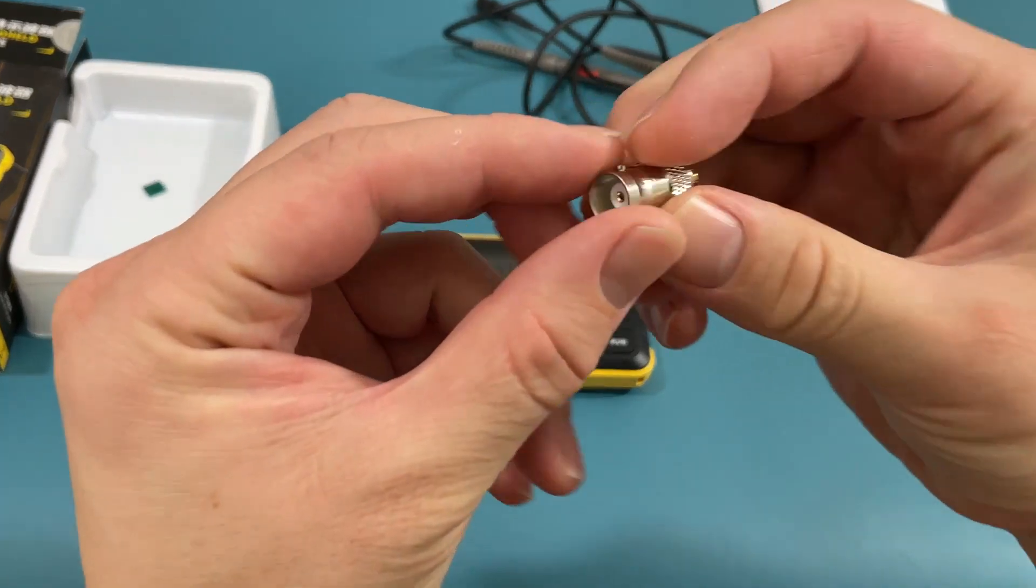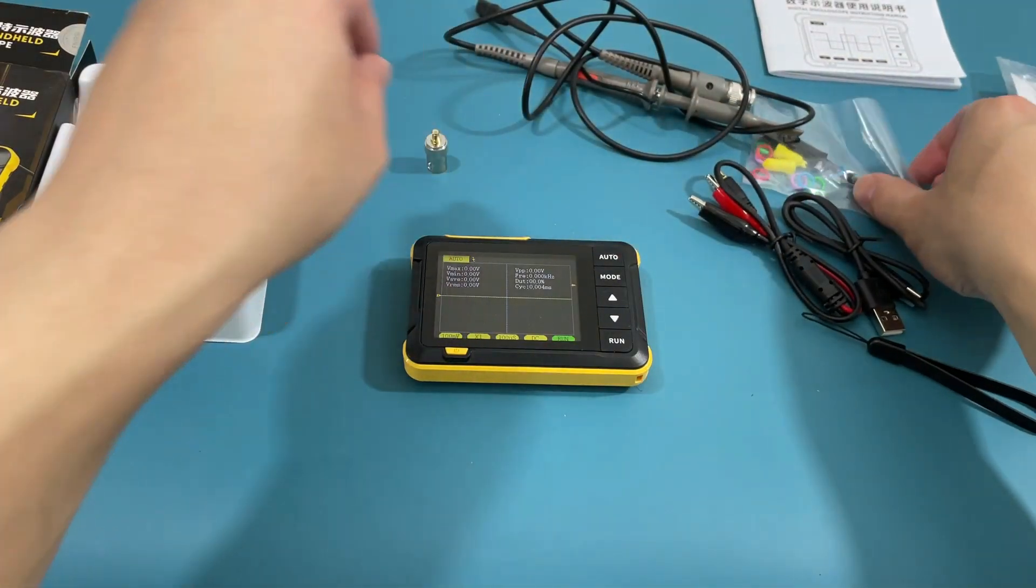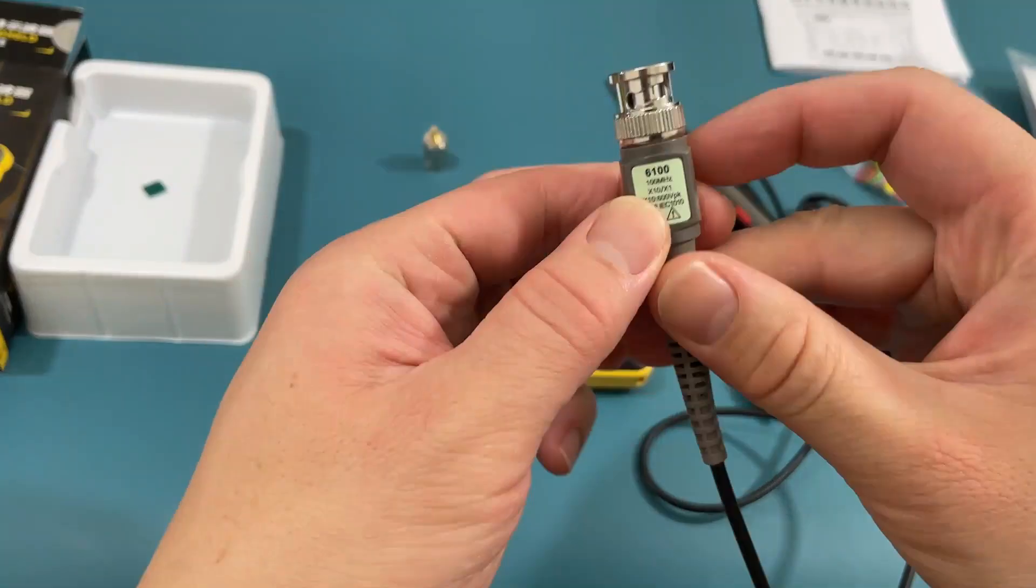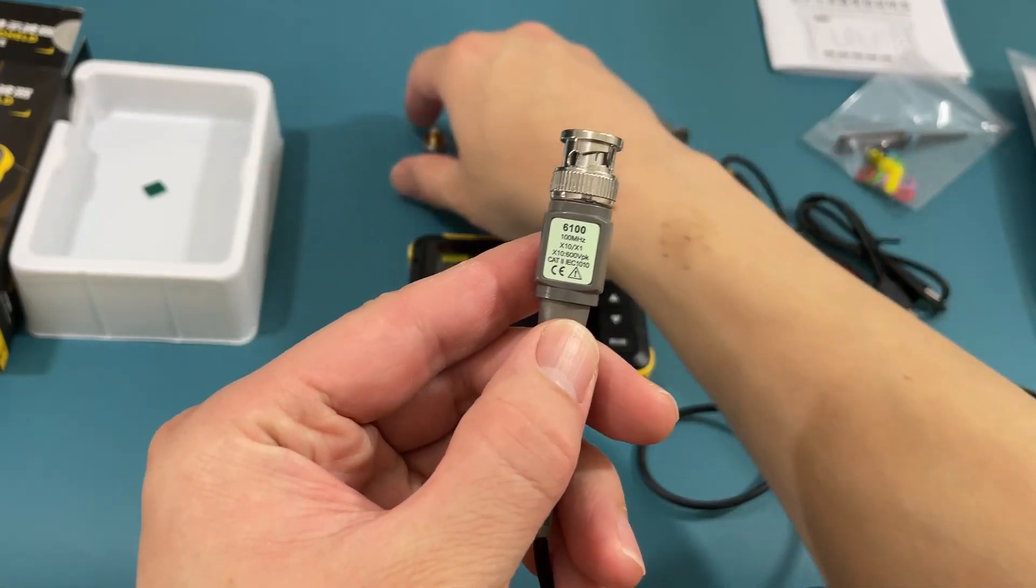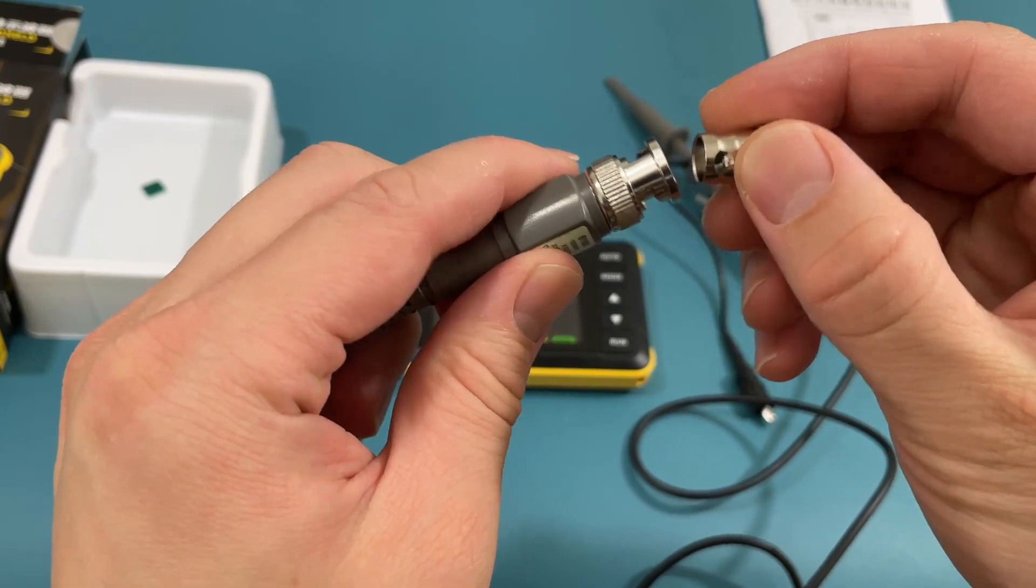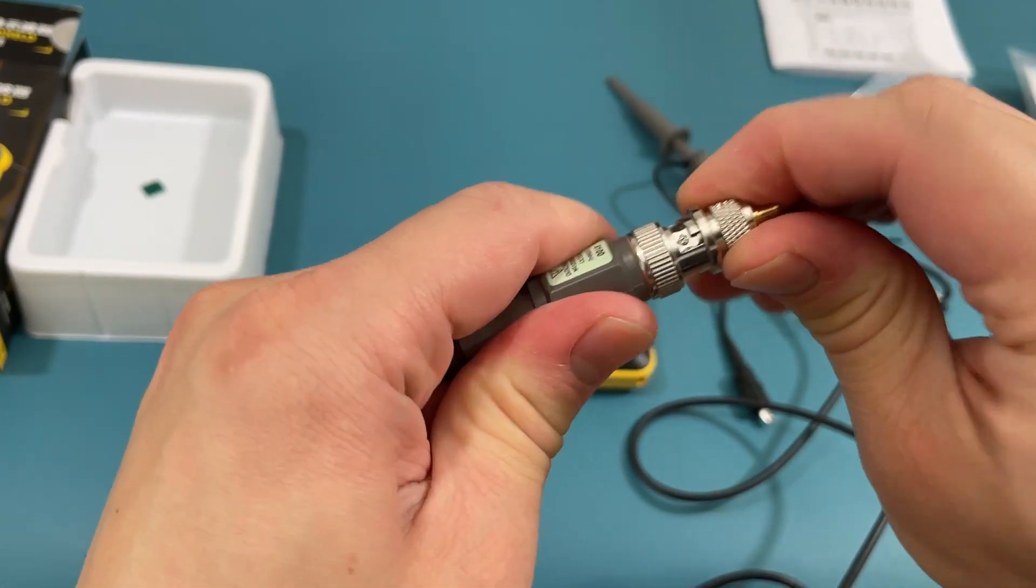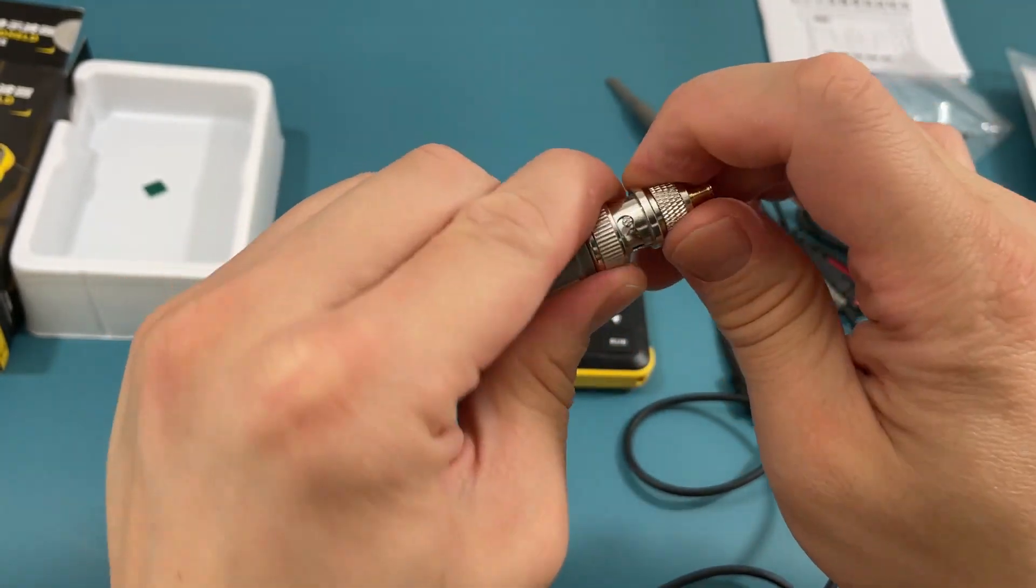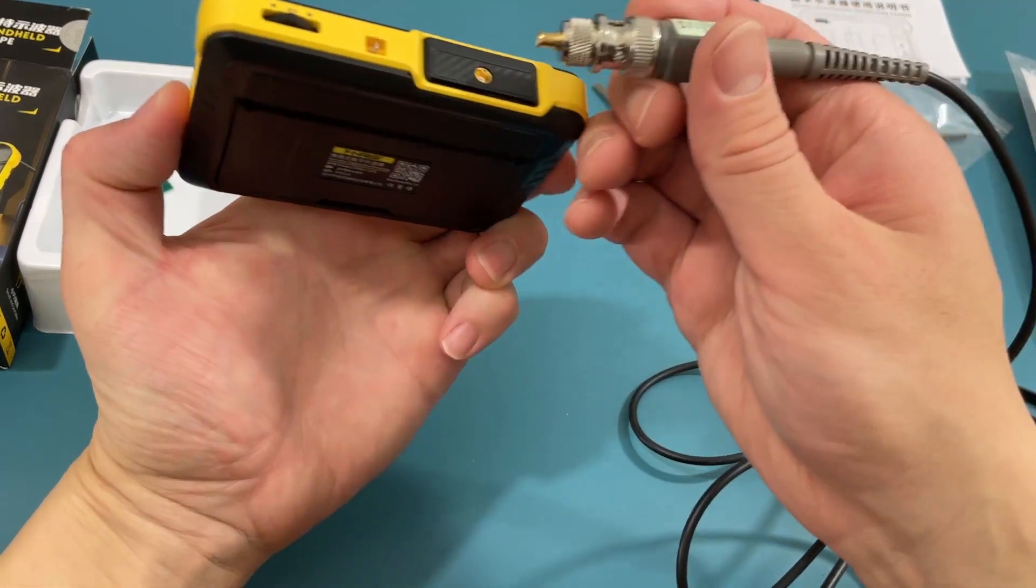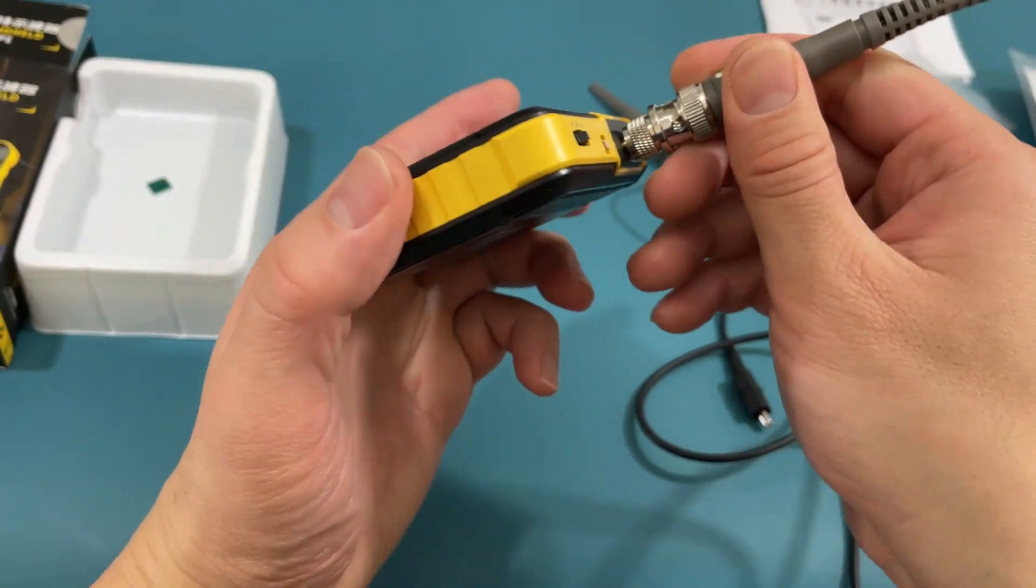This is the adapter that connects the probe and the oscilloscope. Push and twist the adapter until you hear a click to connect the adapter to the probe. Push the adapter into the signal input probe interface. You should hear a click.